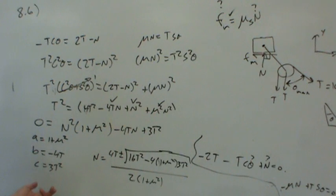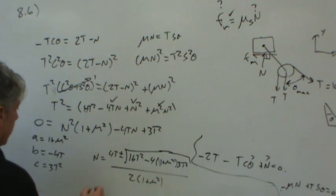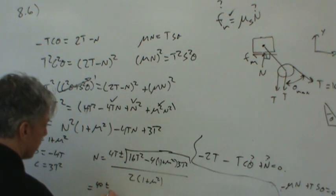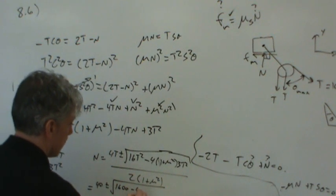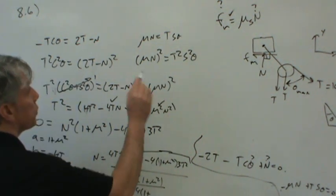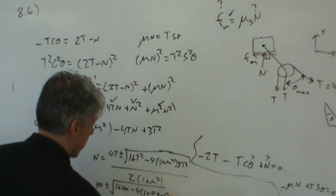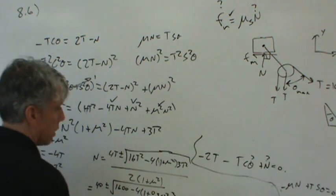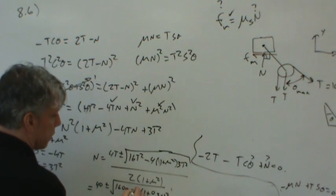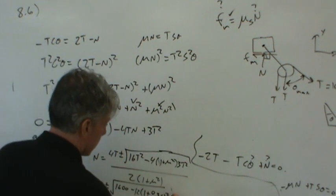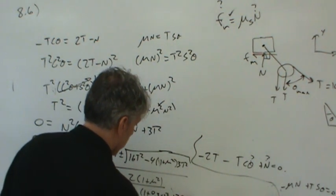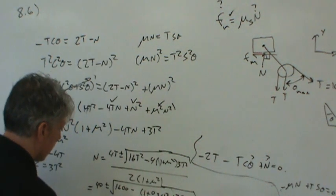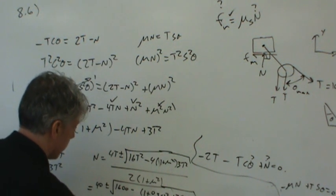If I'd have plugged in numbers a long time ago, it would look a lot more friendly, but I want you to get used to working with symbols. We know what T is. It's 10. This is the same thing as 40. Those are minus root. Well, T squared would be 100 times 16 would be 1,600 minus 4 times 1 plus mu squared. But mu, I've erased it. It was 0.35. Times 3. So I guess I could put that 3 with the 4 and call it a 12. And then times T squared, so that's times 100. So I guess I could have just written 1,200. All divided by 2 times 1 plus 0.35 squared. There we go. So that should give me the normal force.